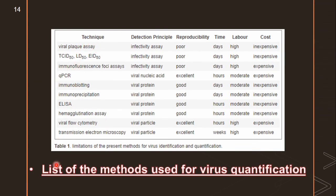Here is the list of methods used for virus quantification — how you may quantify the virus. These include quantitative PCR, viral plaque assay, ELISA, and hemagglutination assay. These are the most important methods of viral quantification.